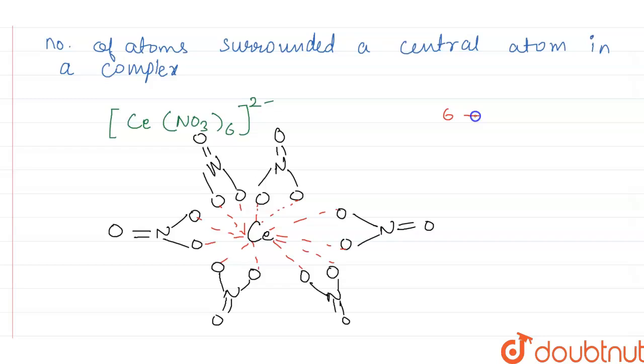So we have six NO₃ molecules, six nitrates. Therefore, in each nitrate molecule, two oxygen atoms are bonded with cerium. So therefore, the coordination